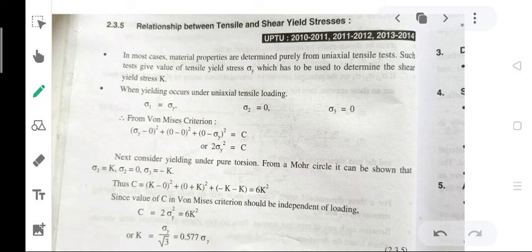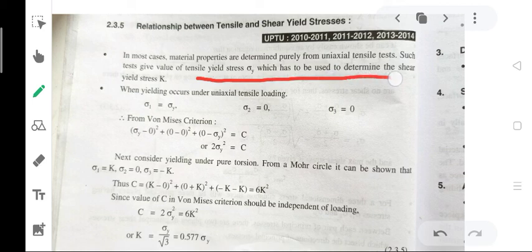Such tests give the value of tensile yield stress sigma_y, which has to be used to determine the shear yield stress k. When yielding occurs under uniaxial tensile loading: sigma_1 = sigma_y, sigma_2 = 0, and sigma_3 = 0.